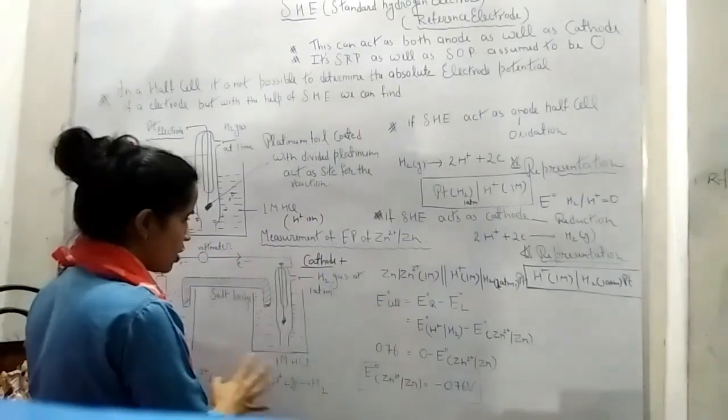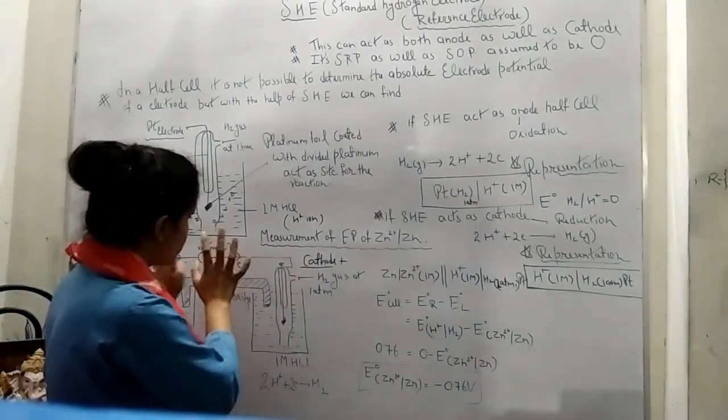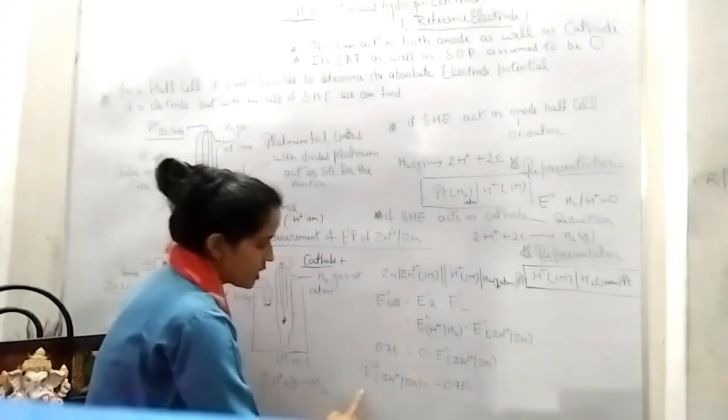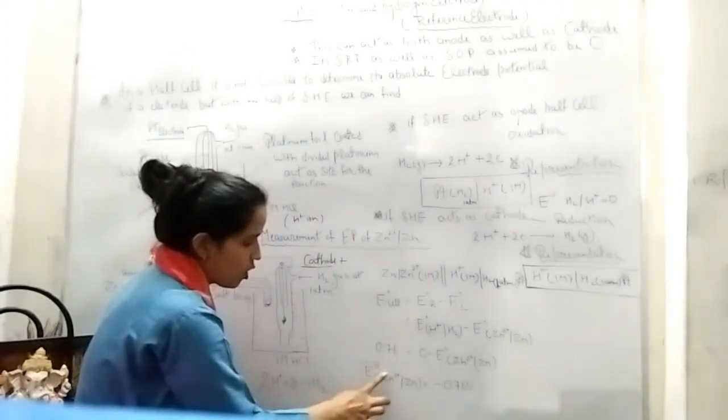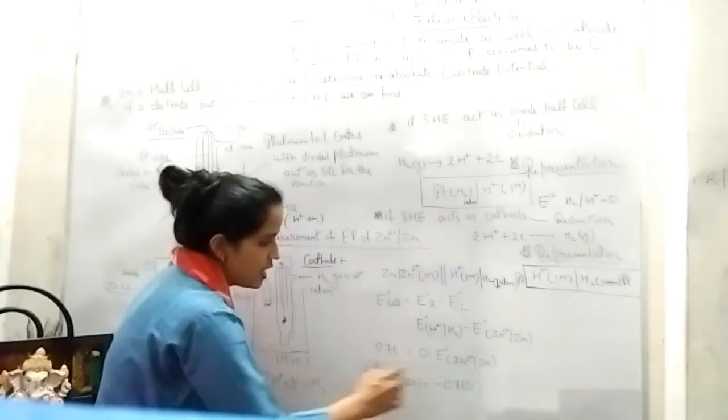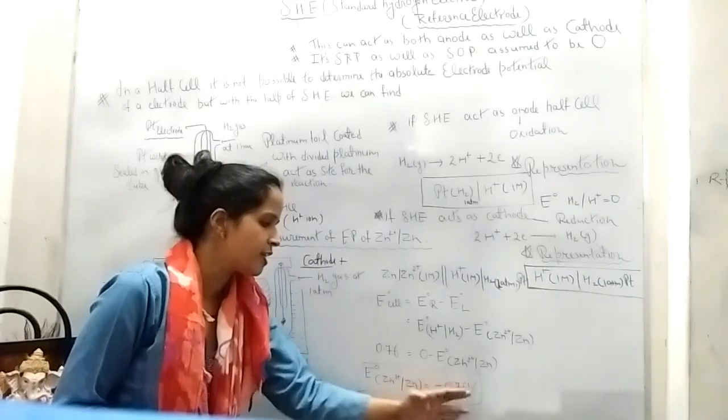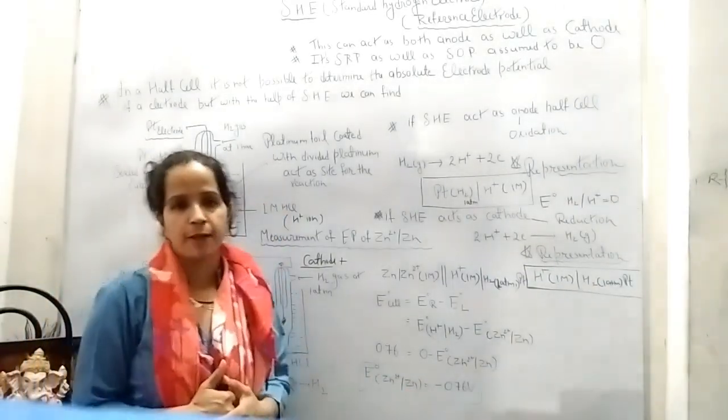And the E°cell when reaction occurred, E°cell was identified as 0.76. So the standard electrode potential of E° Zn²+/Zn is equal to minus 0.76 volt. This is the use of SHE.